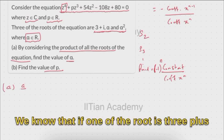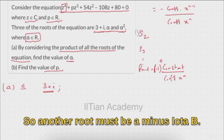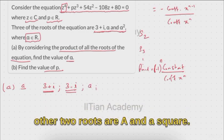Now we know that if one root is 3 plus iota, another root must be its conjugate pair, which will be 3 minus iota. So another root is 3 minus iota, and the remaining two roots are a and a squared.